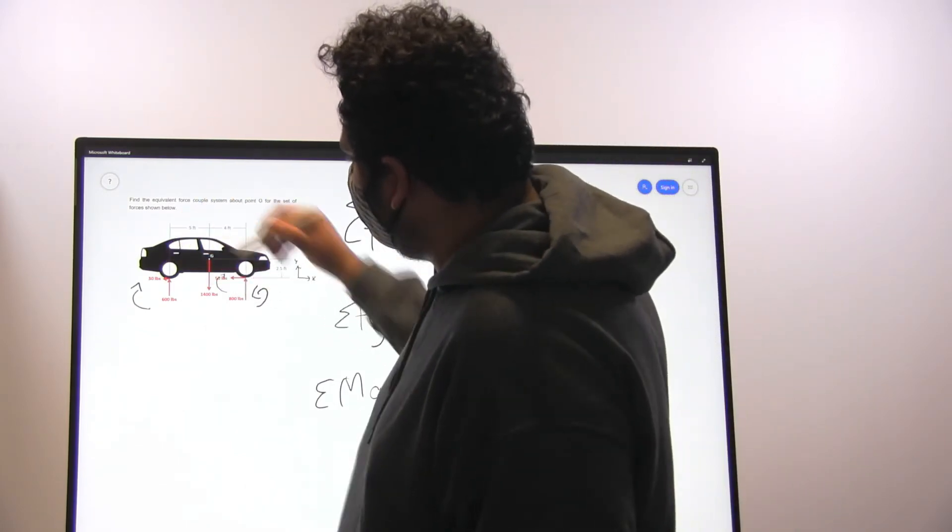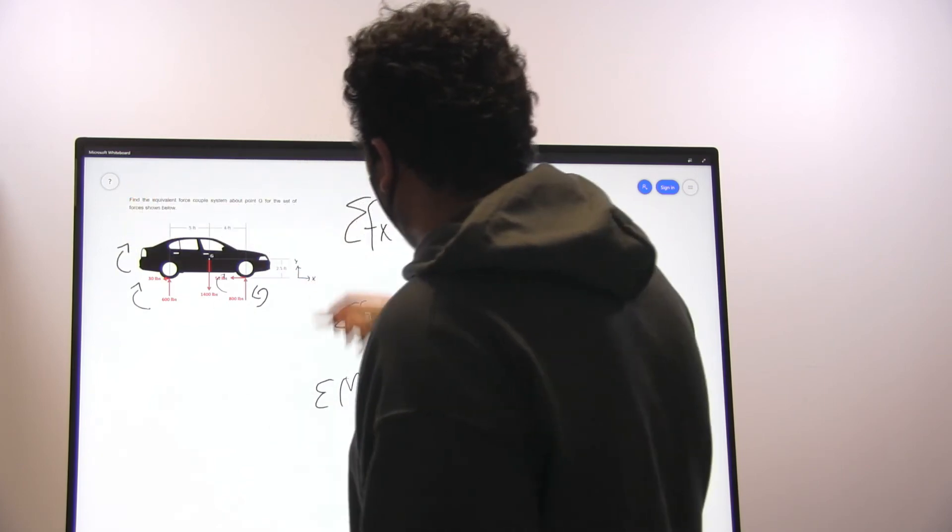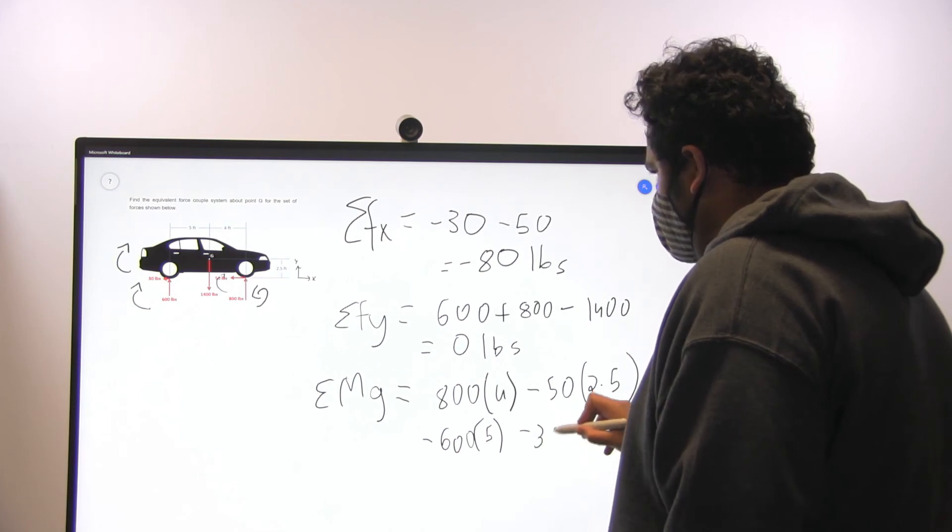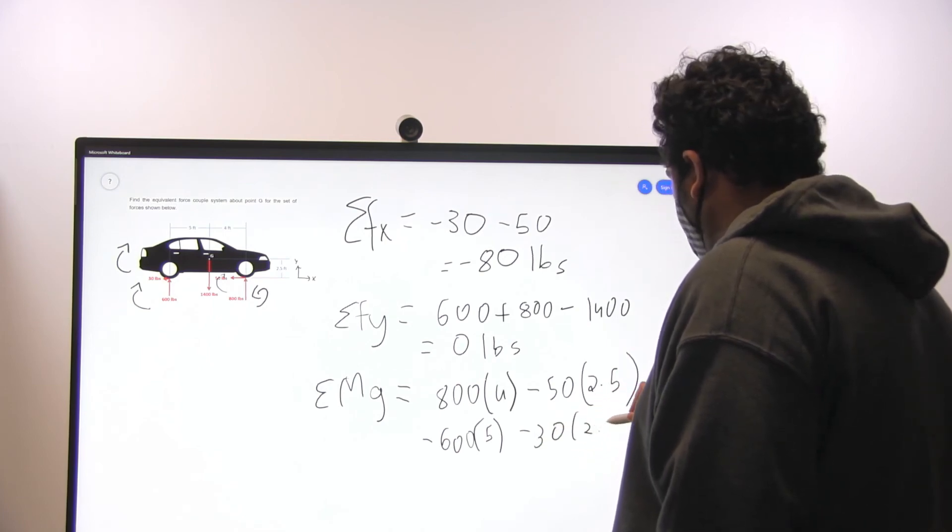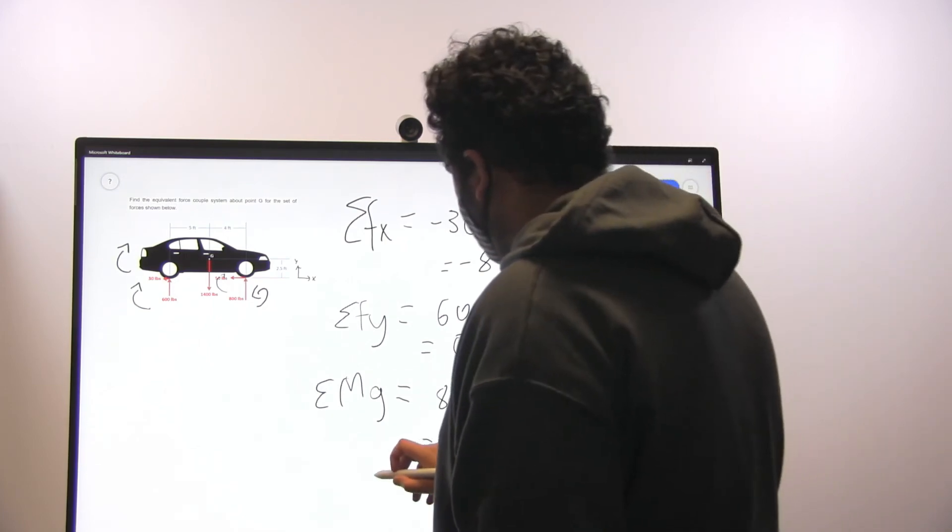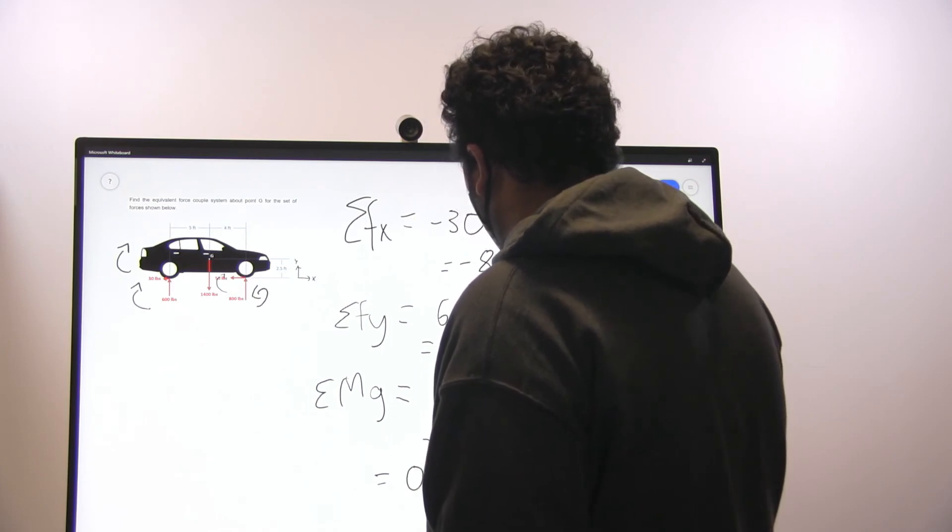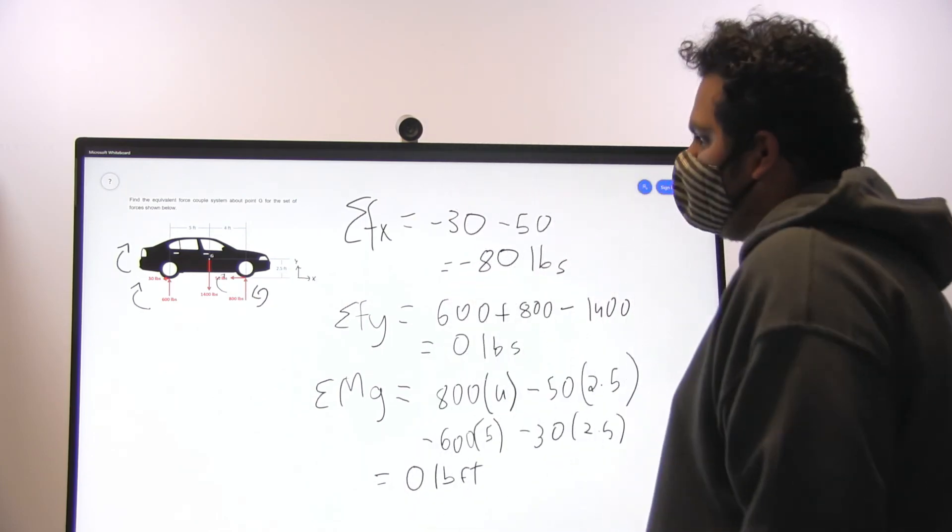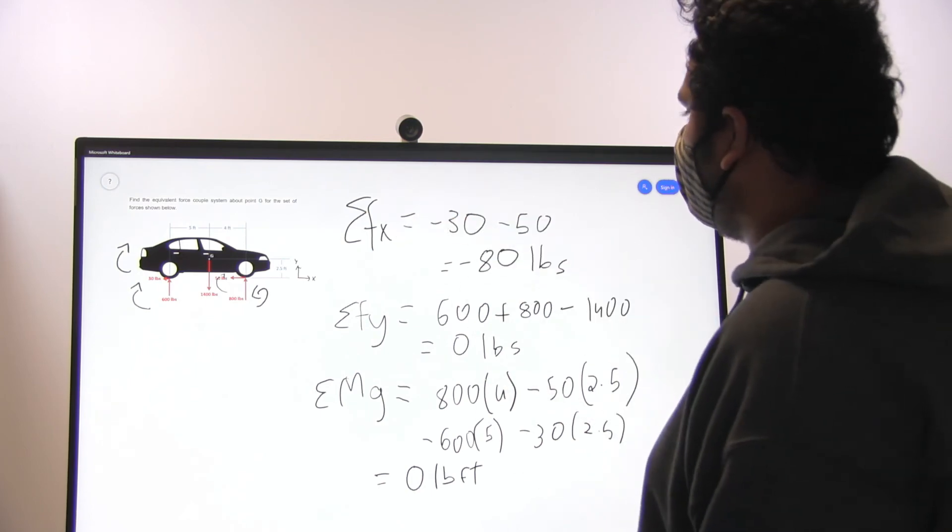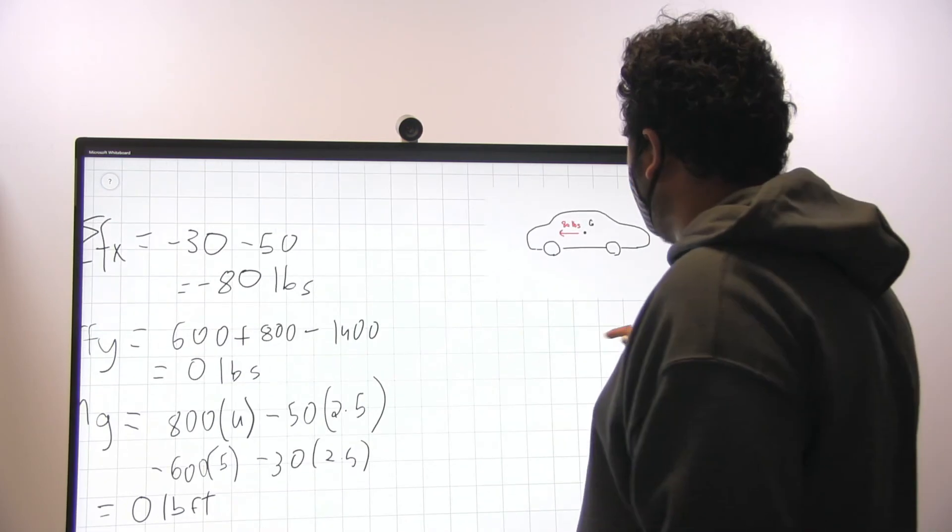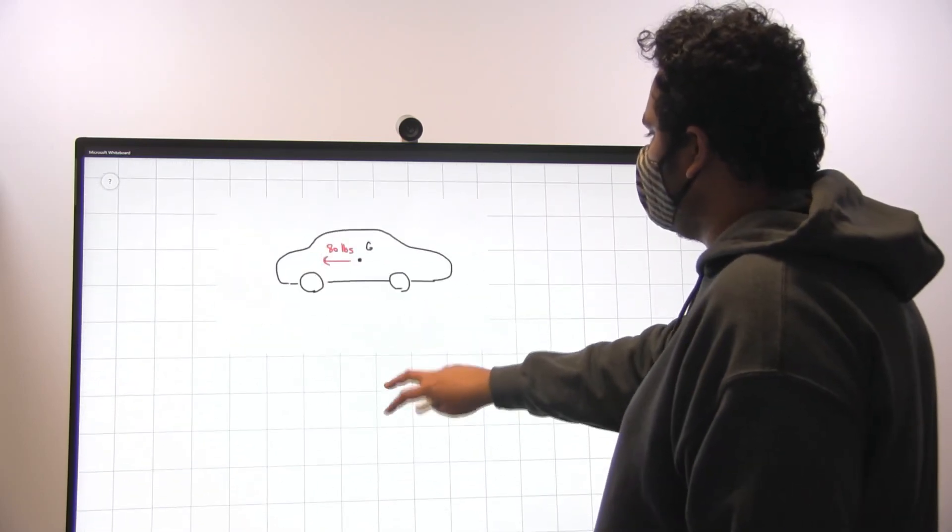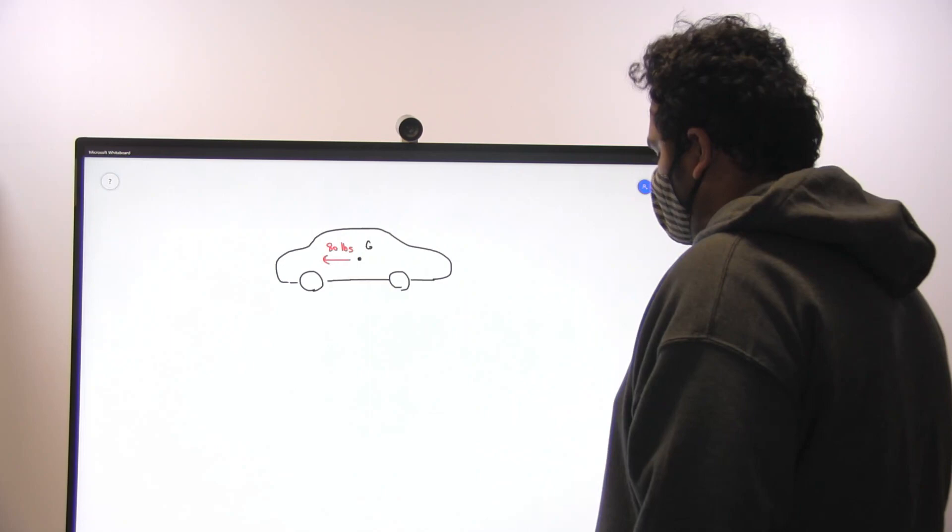And we can do the same for this 30 pound force, which is also clockwise, the length of 2.5 feet. Minus 30 times 2.5. And this is going to turn out to be 0 pound-feet. And hence, the total equivalent force on this system is going to be minus 80 pounds in the negative x direction.